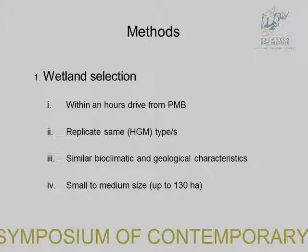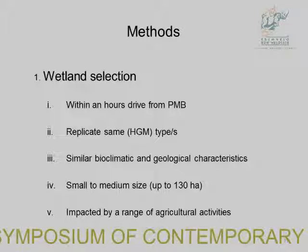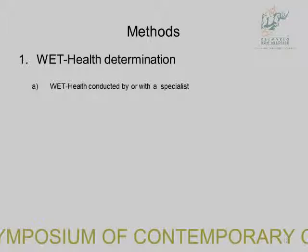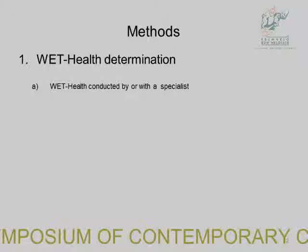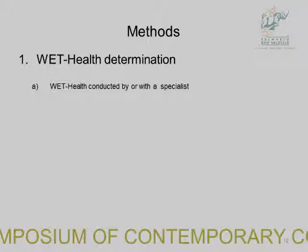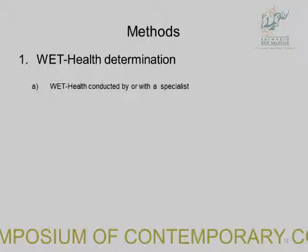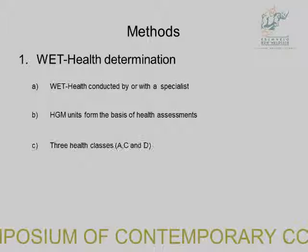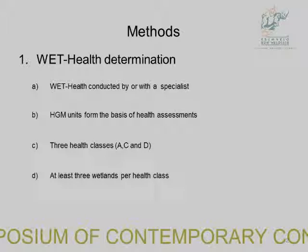I used small to medium-sized wetlands, up to 130 hectares, and they had to be impacted by different agricultural activities. WET-Health assessments were done by specialists — either I worked alongside them or used existing data that was already available — and a few were done with my supervisor. I used three WET-Health classes: A, C, and D, with at least three replicates per class.